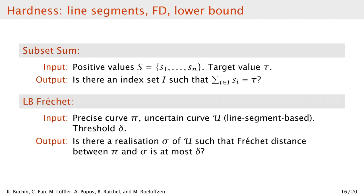Now we will talk about the setting where the uncertainty regions are modeled by line segments. We show NP-hardness of the decision problem by reduction from subset sum. Recall that in the subset sum problem we are given a set of numbers and a target, and we are asked if we can select some of the numbers so that they sum up to the target. This problem is NP-complete. In the problem we consider, we are given a precise curve, an uncertain curve, and a threshold for the Fréchet distance. We are asked if we can select the realizations of the points so that the Fréchet distance is below the threshold.